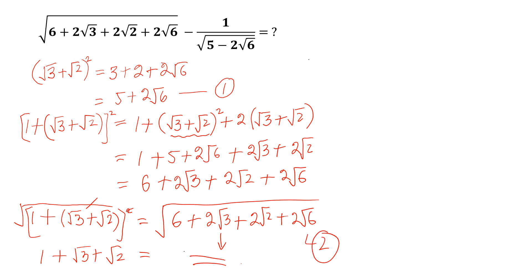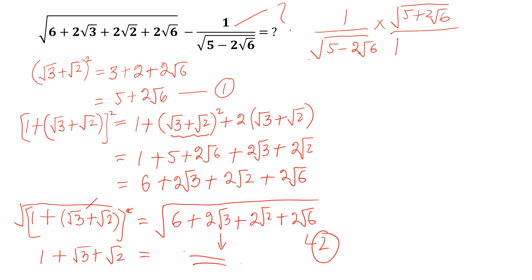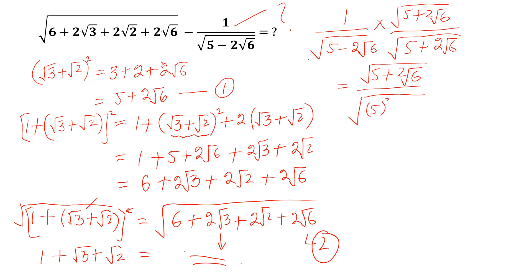Now we take 1 divided by √(5 − 2√6). We multiply and divide by the conjugate of this, which gives us √(5 + 2√6) divided by √(5 + 2√6). Simplifying: √(5 + 2√6) divided by √(25 − 24), and since 25 − 24 = 1, this equals √(5 + 2√6).